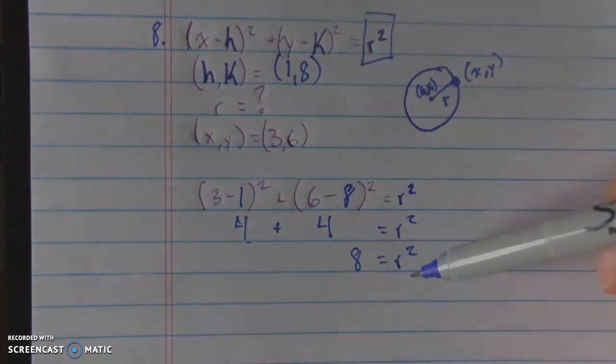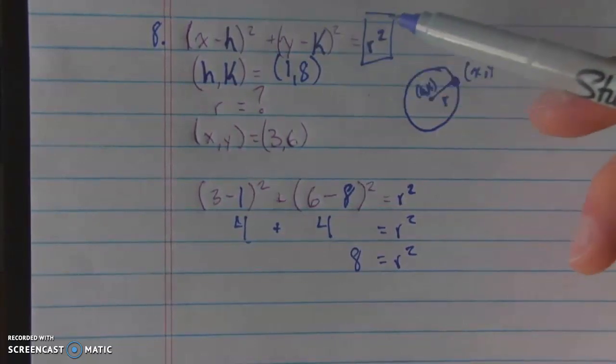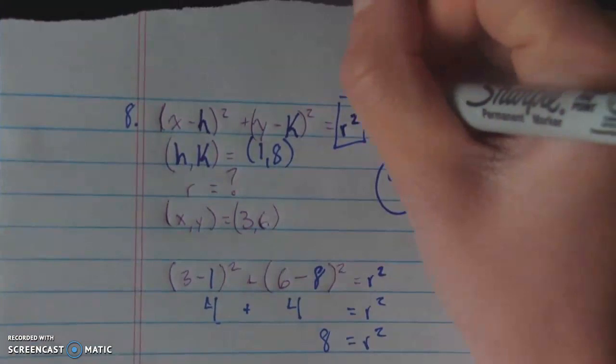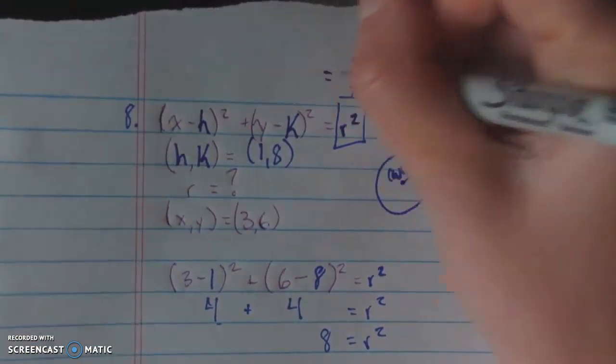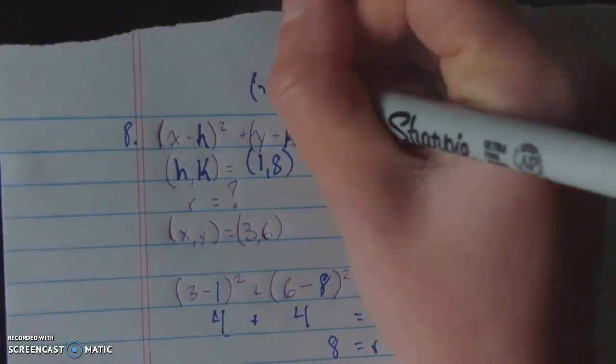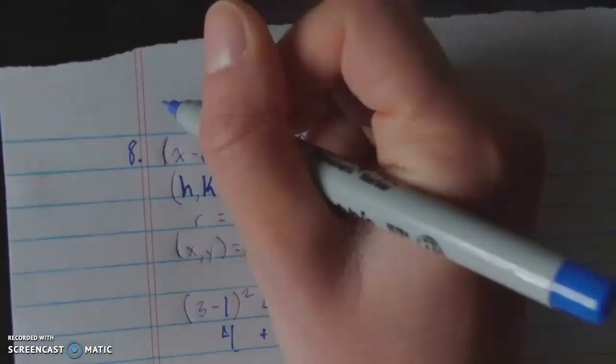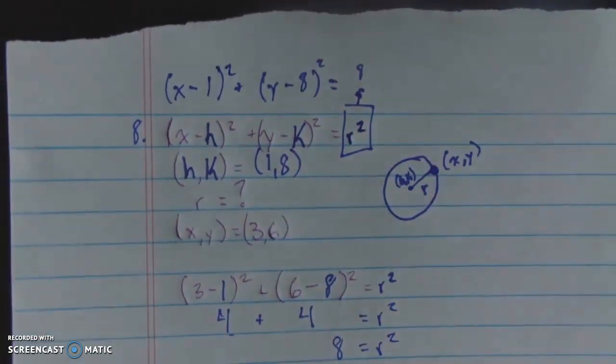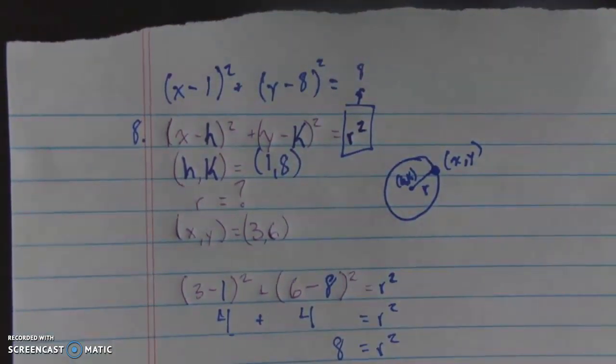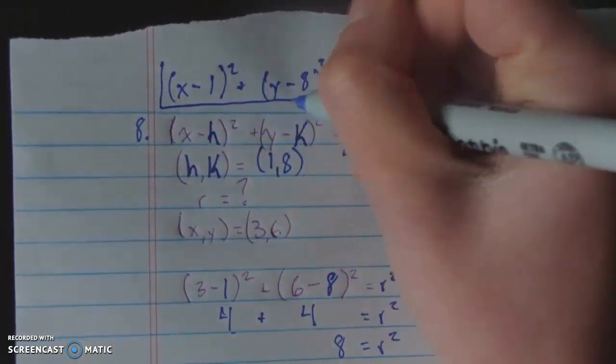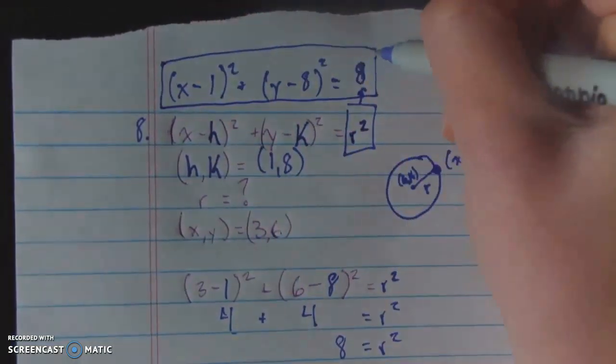Here I could find what the radius equals by taking the square root of both sides. But the thing is, I don't need to do that. Since what I want in my formula is an r squared, why not just substitute 8 for r squared? So that means here, r squared is equal to 8, h and k are equal to 1 and 8, which means that once I've filled in my full formula, I end up with x minus 1 squared plus y minus 8 squared is equal to 8.